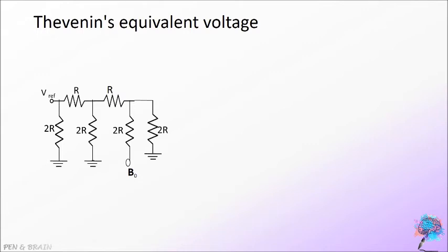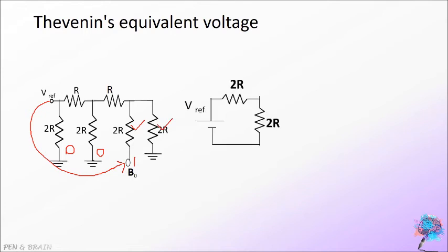Now, let us find out Thevenin's equivalent voltage. Consider the case B0 is 1, B1 is 0 and B2 is 0. The reference voltage is available through B0 across the resistors. So, we can draw the circuit diagram as like this. Now, the equivalent voltage is 2R divided by 2R plus 2R that is V reference by 2.